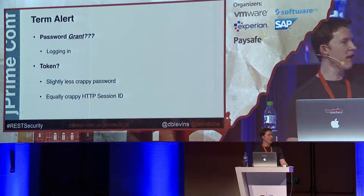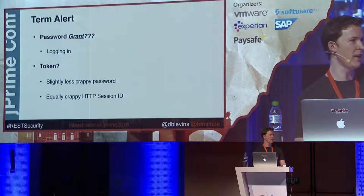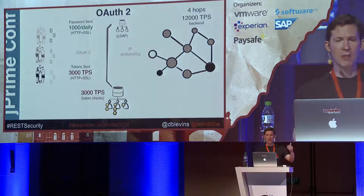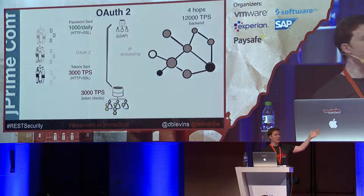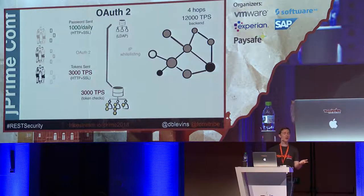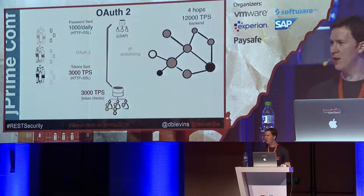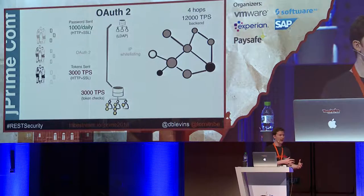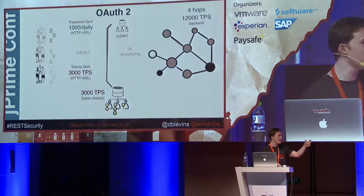A lot of times when we roll this out, we're hoping to get a stateless architecture, and what we have is basically a lot more passwords in the same stateful architecture we had before. In terms of what we've achieved: we're going to say all our users log in with username and password once a day, so we have 1,000 daily hits against LDAP. It was 3,000 per second — now it's 1,000 a day. That's a major gain. But the token server now replacing LDAP is going to get 3,000 transactions per second because it has to check those access tokens.